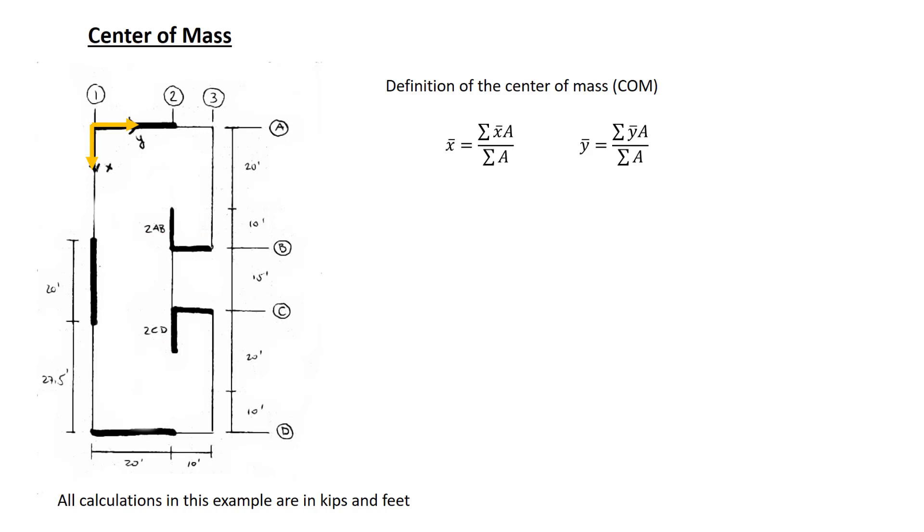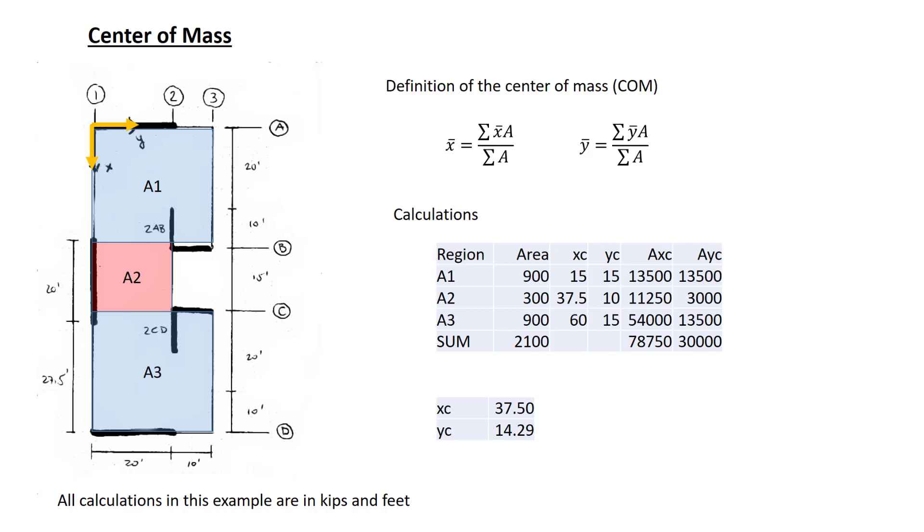Let's calculate the center of mass for this diaphragm. We've divided the diaphragm into three different regions, A1, A2, A3. The individual areas are given here, for instance area A1 is 30 by 30, as is area A3. Area A2 is 15 by 20.